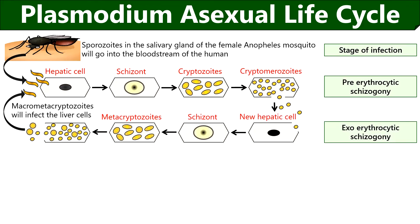The third stage is the exoerythrocytic schizogony, or the stage before RBC infection. Here, the cryptomerozoites again penetrate the wall of new liver cells and follow the same pathway to develop metacryptomerozoites, and eventually the liver cells will burst out to release metacryptomerozoites into the bloodstream.